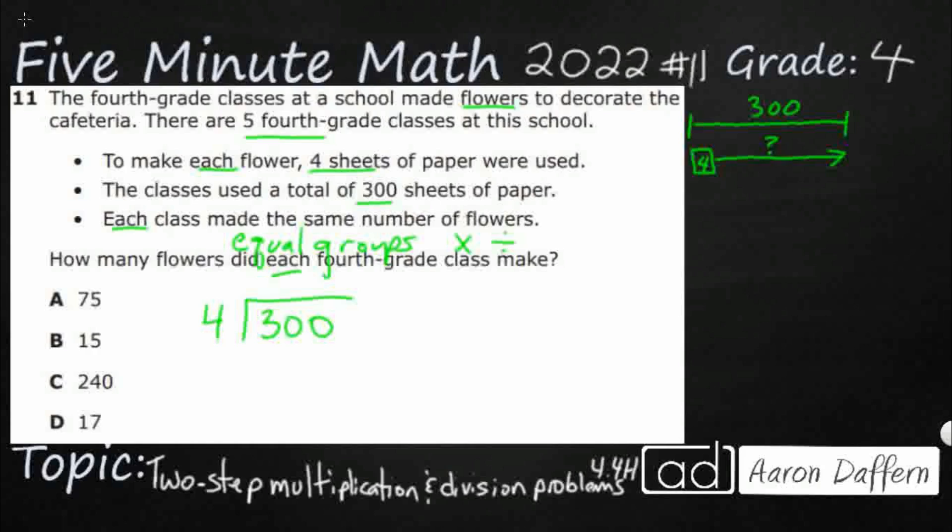All right, so four doesn't go into three, but four does go into 30 right there. Almost eight times, not quite. So we get seven. Seven times four is 28. Remember when we're doing this division here, we're just dealing with the first numbers that we can actually divide into. So we're going to ignore that second zero for right now. 30 minus 28 is two. We check to make sure that that two is smaller than the divisor. Two is smaller than our divisor, so we're good.